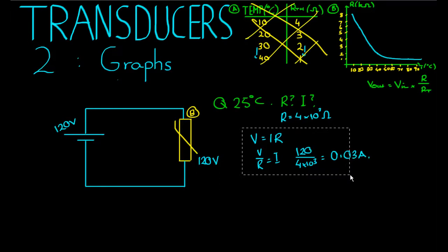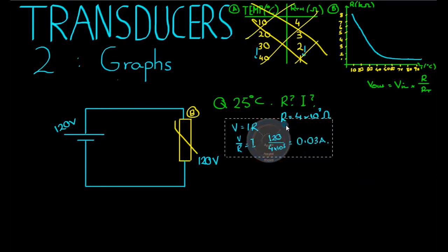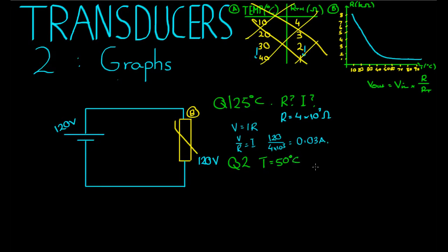Moving on to the next question. If the temperature were to change, so now not looking at that, that's question 1, question 2. A room in which the temperature is 50 degrees, T equals 50 degrees Celsius. Again, let's find the resistance and the current.